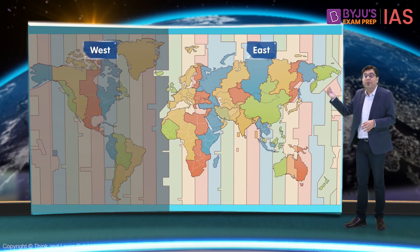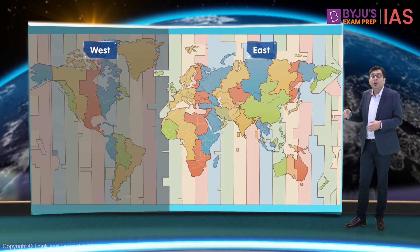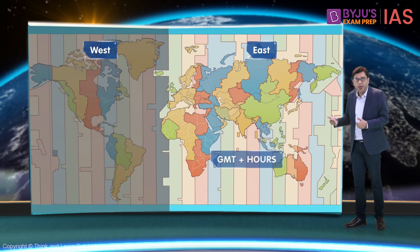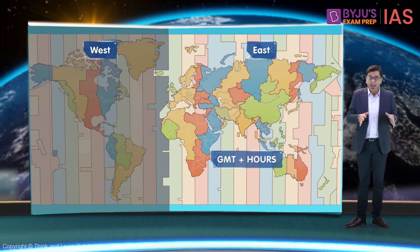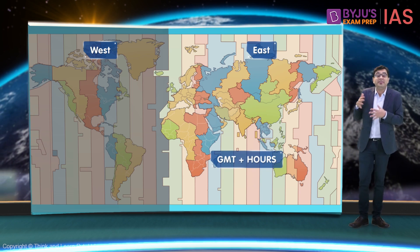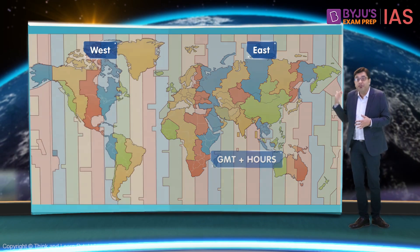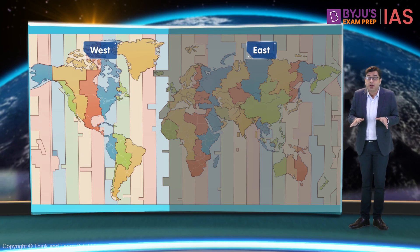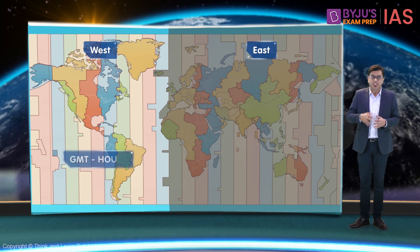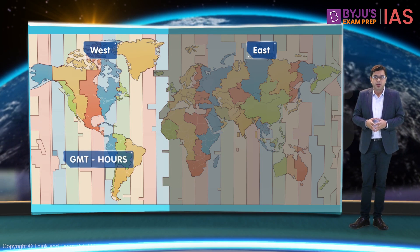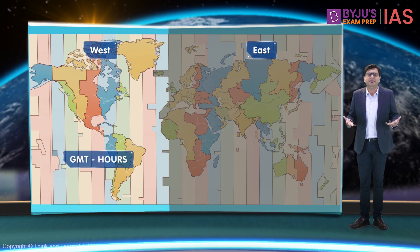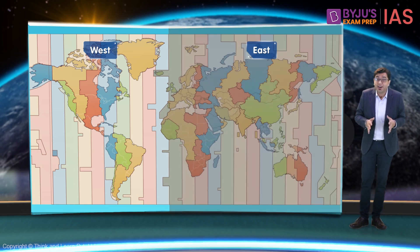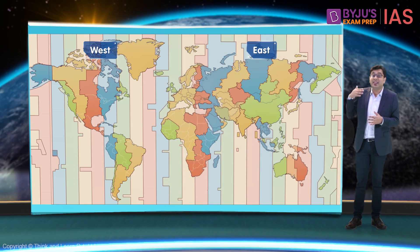Similarly, there are different time zones across the world. In general, places located to the east of the prime meridian follow a time that is ahead of GMT. On the other hand, places located to the west of the prime meridian follow a time behind GMT. Sometimes a country can have a vast east-to-west extent.